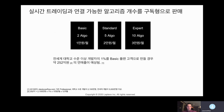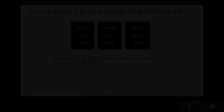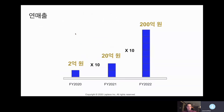Our business model is a subscription model. There are three plans. You can connect two algorithms using 10,000 Korean won per month. We will earn 200 million Korean won this year. So my first question, James, is: what advantages does Laplace have over other algorithmic trading platforms?